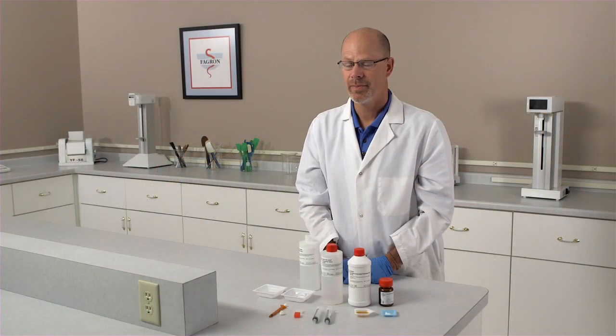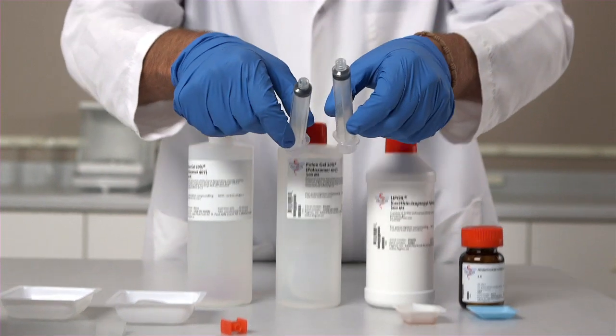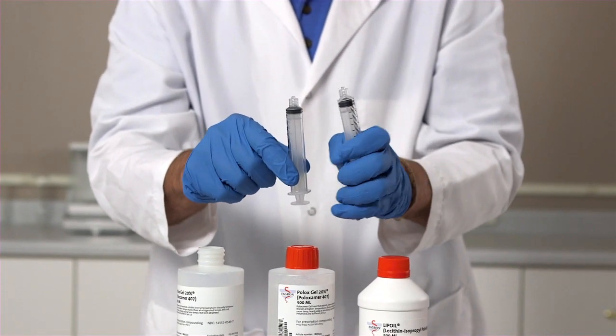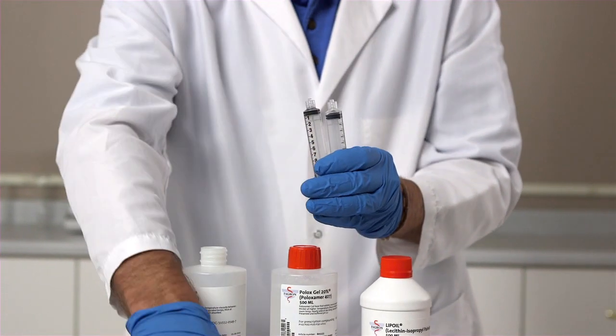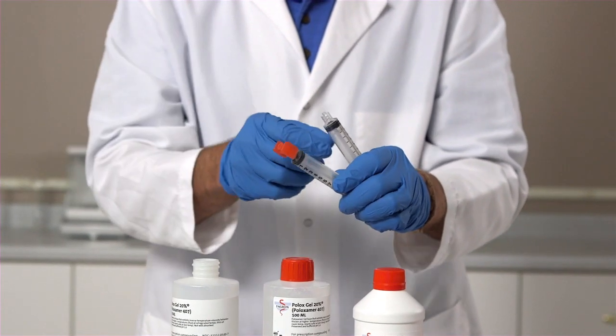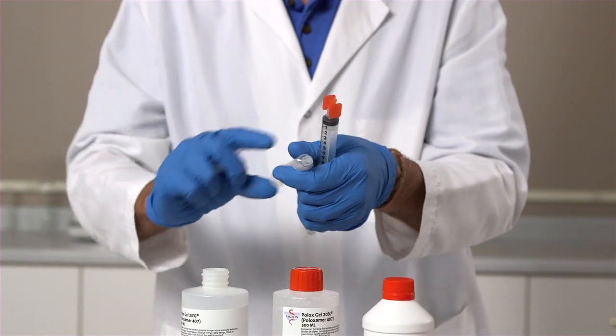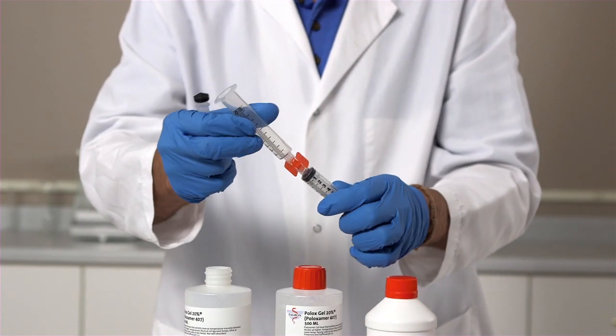I will now mix this preparation together using the syringes. The first thing we'll do is take our two luer lock syringes and the red luer-to-luer connector. Thread the device onto the end of the syringe.